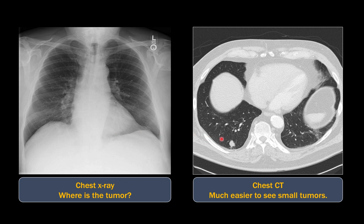For a radiologist, that makes intuitive sense because a chest x-ray is a two-dimensional representation of the chest — basically one or two pictures, a frontal view and a lateral view — whereas a chest CT is a three-dimensional representation with usually hundreds of pictures of the lungs. Here's a chest x-ray and a CT of the same patient: you can see this nodule outlined in red on the CT, which is really hard to see on the chest x-ray. It's much easier to see small nodules with CT compared to x-ray.